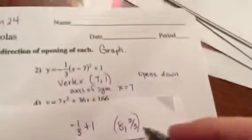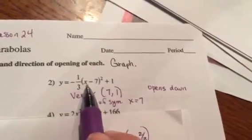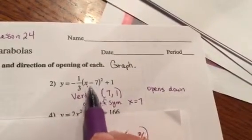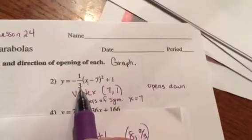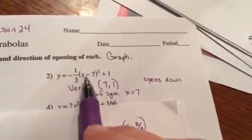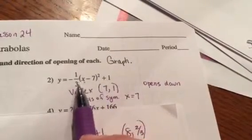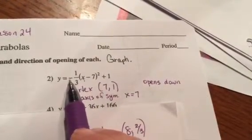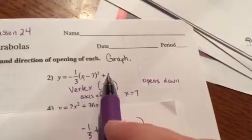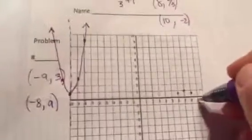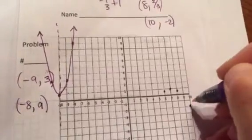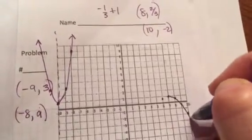That's okay. Just estimate it. So here's 8 and 2 thirds. It's about right there, which means I'm going to have the mirror image right on the other side. Probably a point I would like better would be 10. Because if I plug in a 10, do you see how I get 10 minus, I get a 3, and the 3 squared is 9, and 9 is divisible by 3. So I'm going to like that point better. So if I get a 9 divided by 3 is 3, so it's going to be a negative 3 plus 1, which is a negative 2. So I've got 10 negative 2, which is right there.